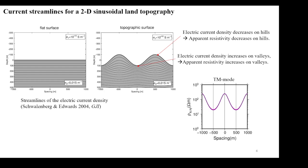This slide shows the streamlines of electric current density for sinusoidal topography. Electric current density is relatively small on hills; as a result, apparent resistivity becomes small on hills. On the other hand, electric current density is relatively large in valleys; as a result, apparent resistivity becomes large in valleys.